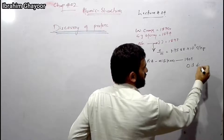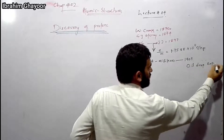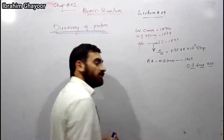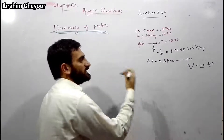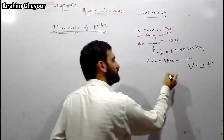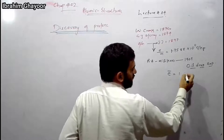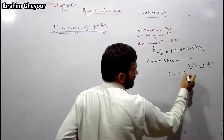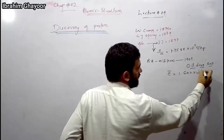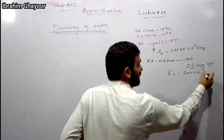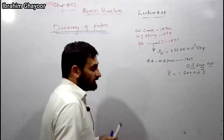The oil drop experiment — Millikan's oil drop experiment — measured the electron charge independently. The electron charge was independently determined to be 1.602×10⁻¹⁹ coulombs. That is the electron charge, as discovered by the oil drop method.